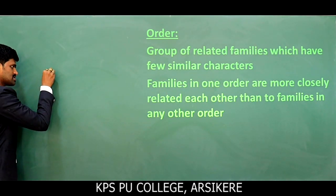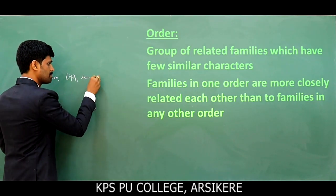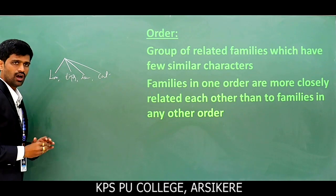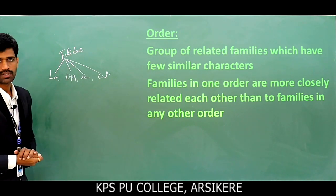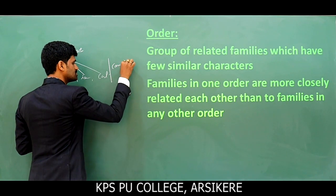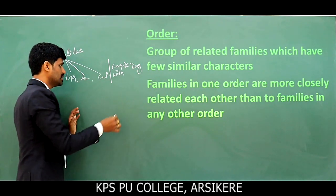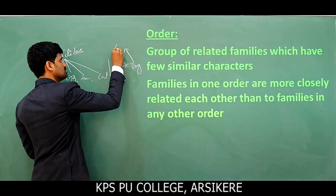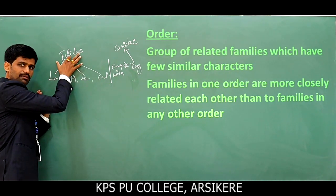For example, same as last class, we discussed lion, tiger, leopard, and cat — all of them are present in one family. Now compare with dog. The dog comes under the family Canidae, while lion, tiger, leopard, and cat come under the family Felidae.